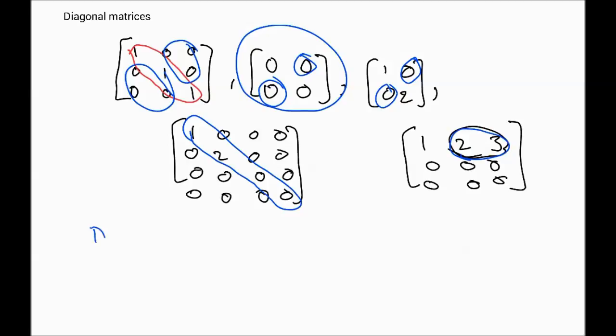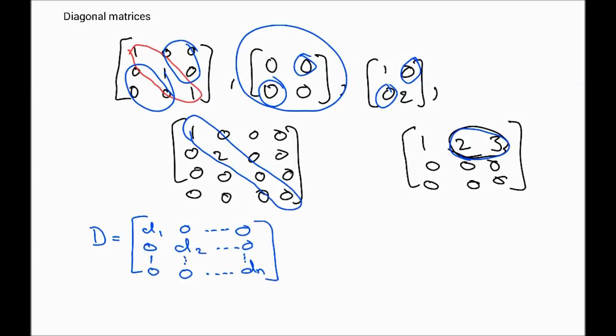Some interesting properties of the diagonal matrix — we usually represent the general diagonal matrix D as having entries d1, d2, through dn on the main diagonal, with everything else zero except on the main diagonal.